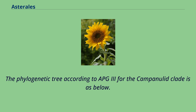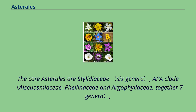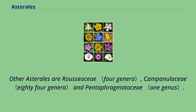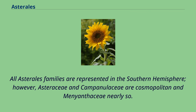The phylogenetic tree according to APG3 for the Campanulid cladus is below. The core Asterales are Stylidiaceae, APA clade, MGCA clade, and Asteraceae. Other Asterales are Rousseaceae, Campanulaceae, and Pentaphragmataceae. All Asterales families are represented in the southern hemisphere. However, Asteraceae and Campanulaceae are cosmopolitan and Menyanthaceae nearly so.